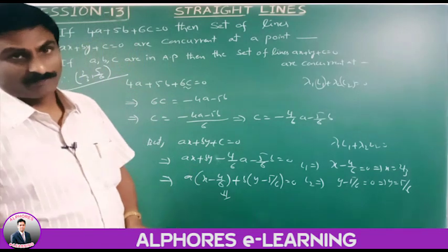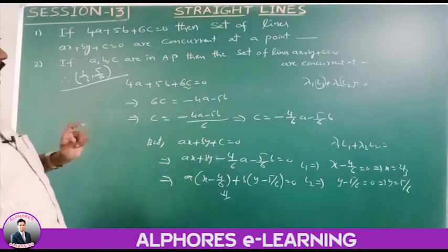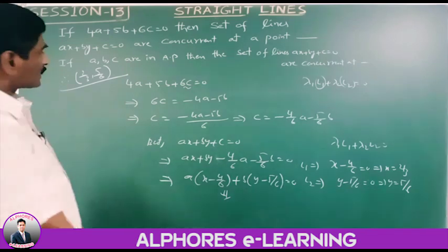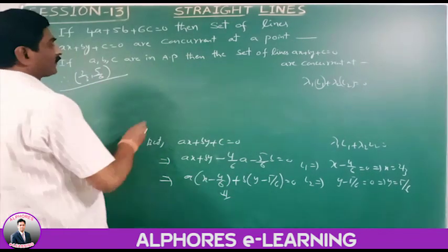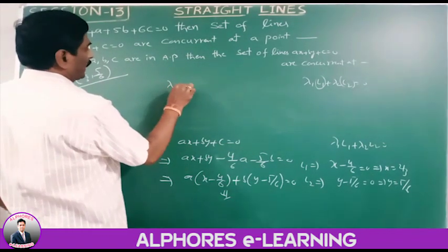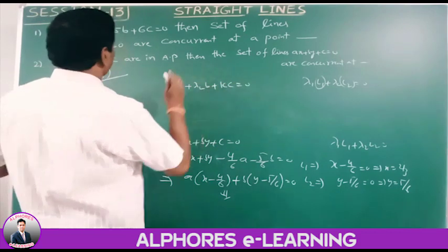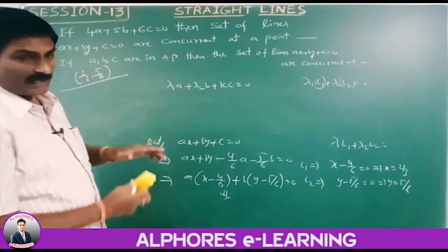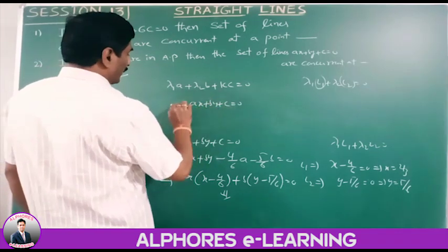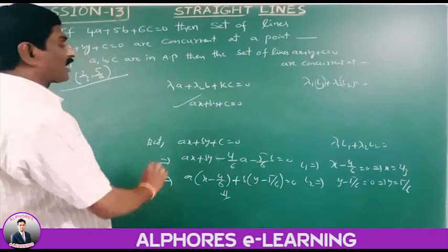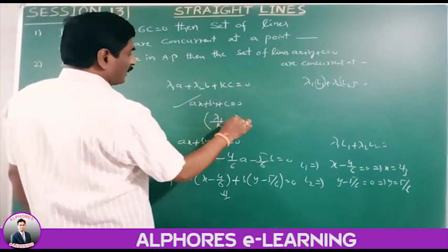Very important — please note this shortcut. If the relation between a, b, c is lambda-1·a plus lambda-2·b plus k·c equals 0, and the family of lines is ax plus by plus c equals 0, then the point of concurrency is simply (lambda-1/k, lambda-2/k).